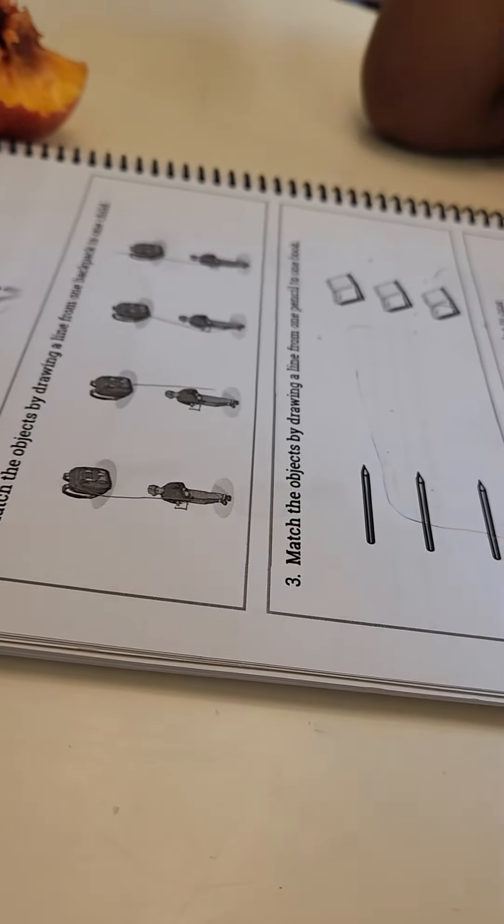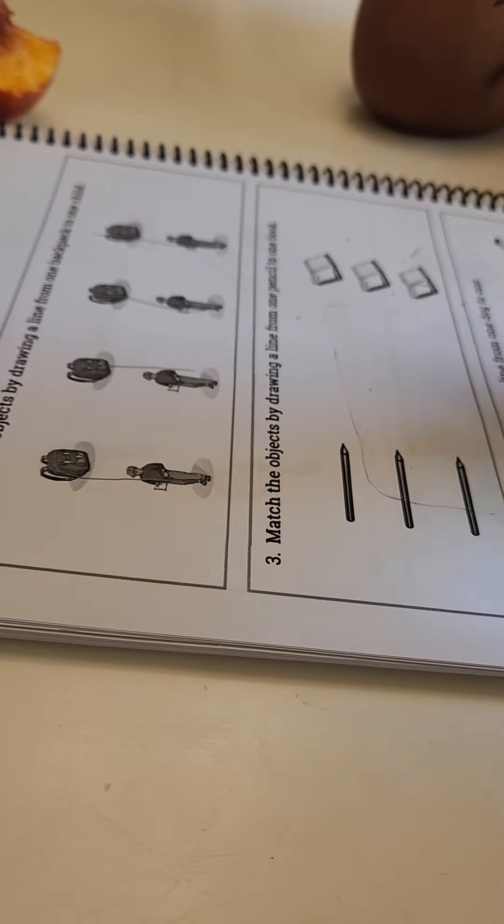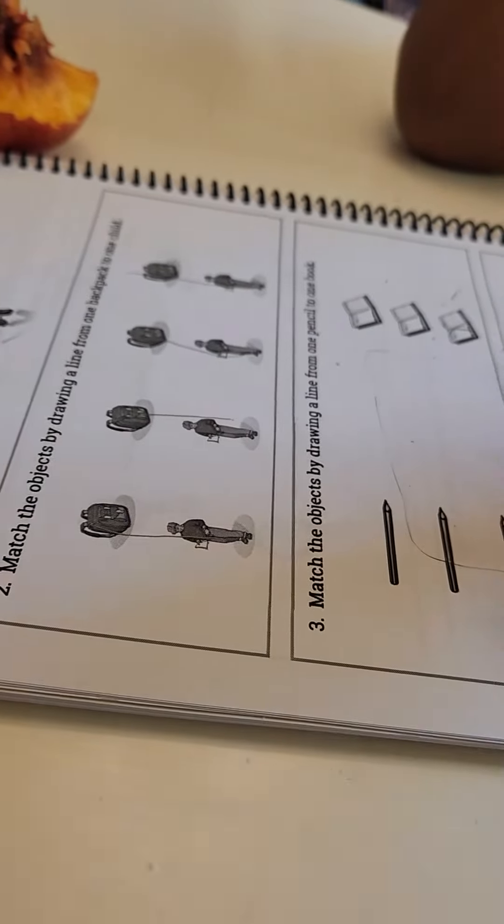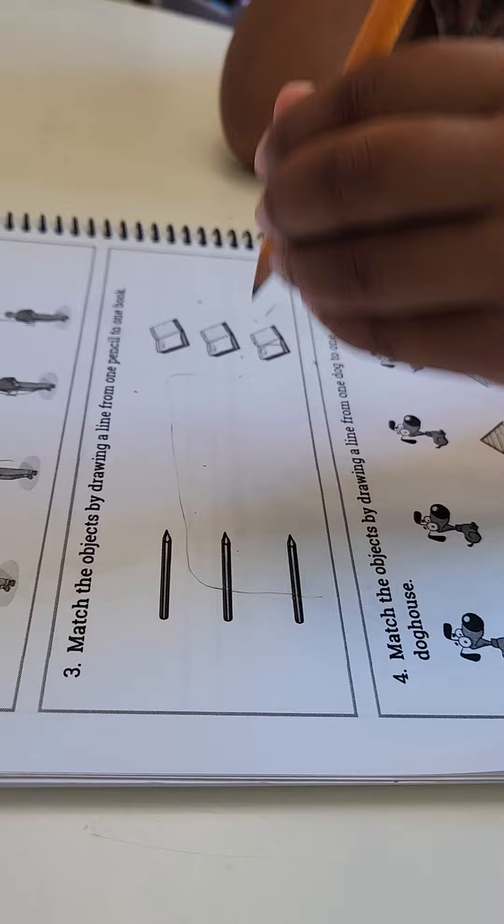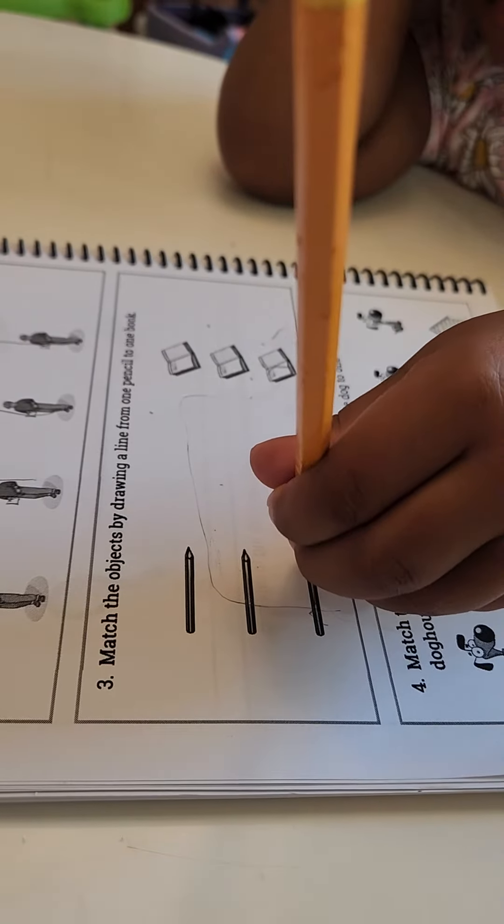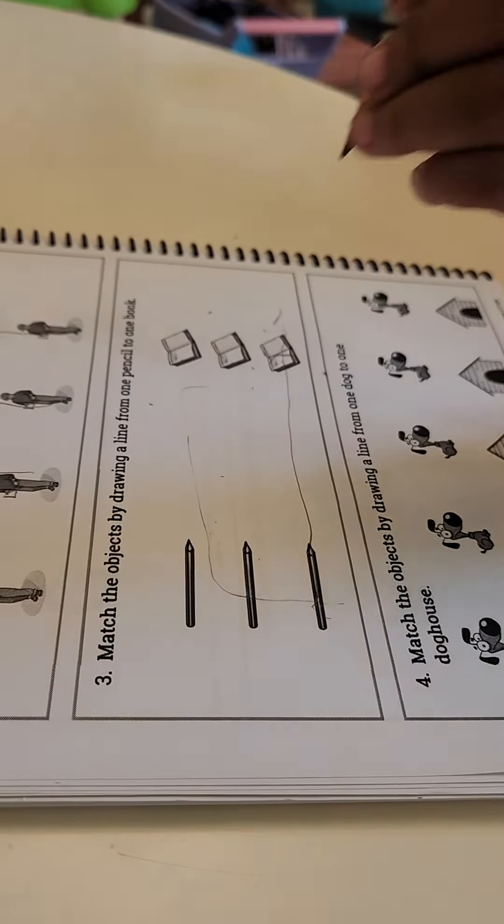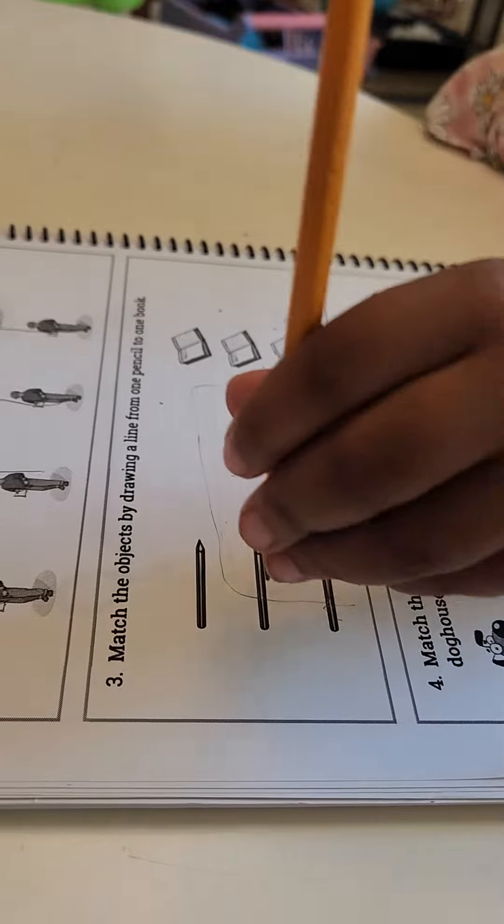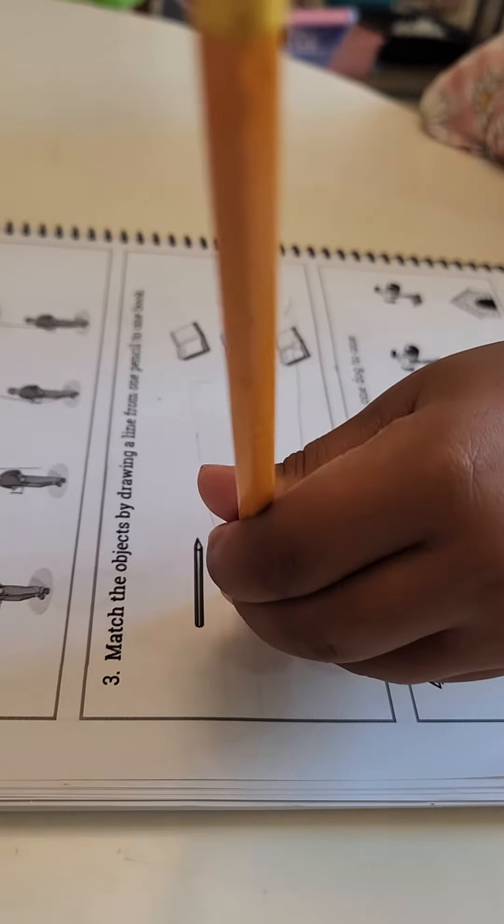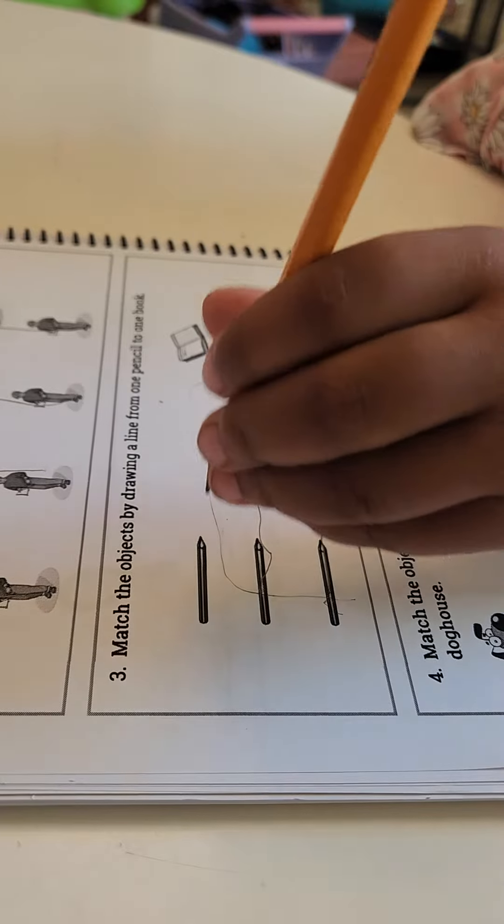Let's hold our pencil. Mommy taught you, now this hand. Yeah, good job. So draw a line from the pencil to the book, just one. How about another one? Okay, how about the other one.